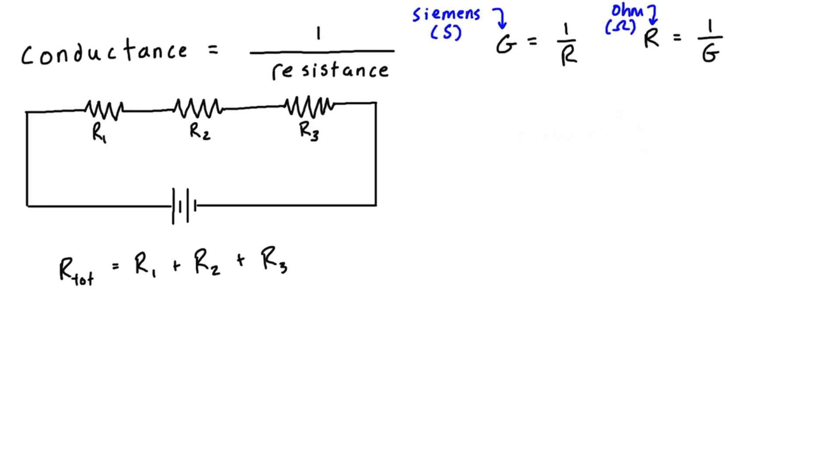Now if we take the inverse of both sides, then on the left side where we have the inverse of R total, that's going to be equal to G total. And then on the right we just have 1 over the sum of R1 plus R2 and R3. But we already expressed above that R total is just equal to the sum of those.